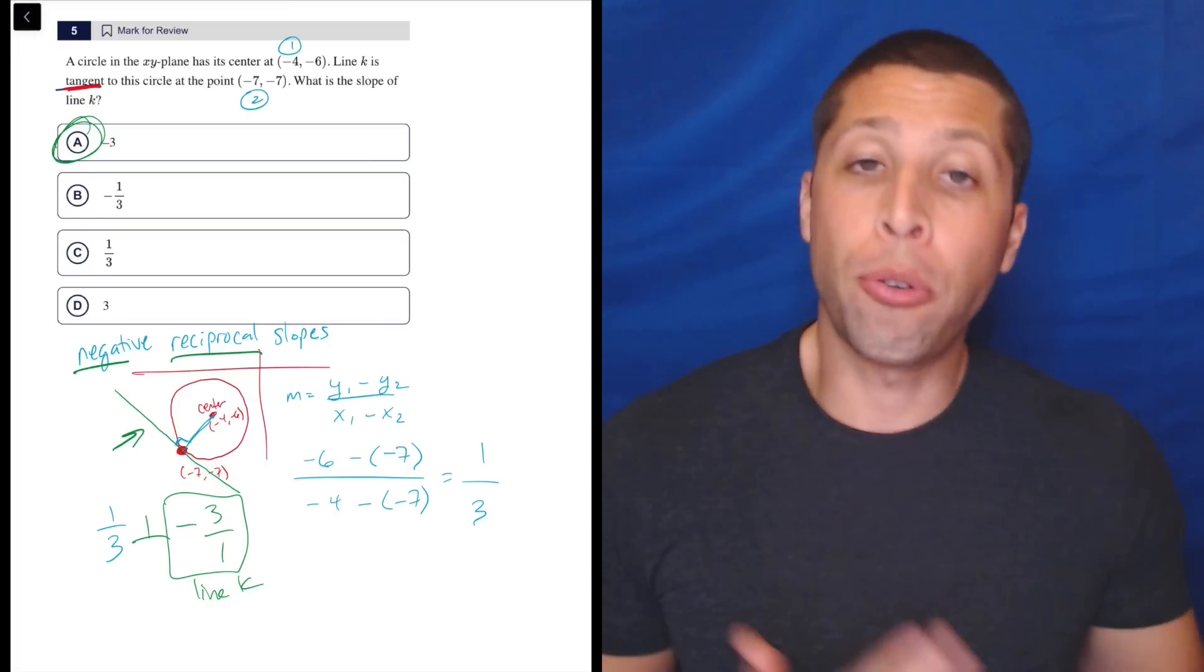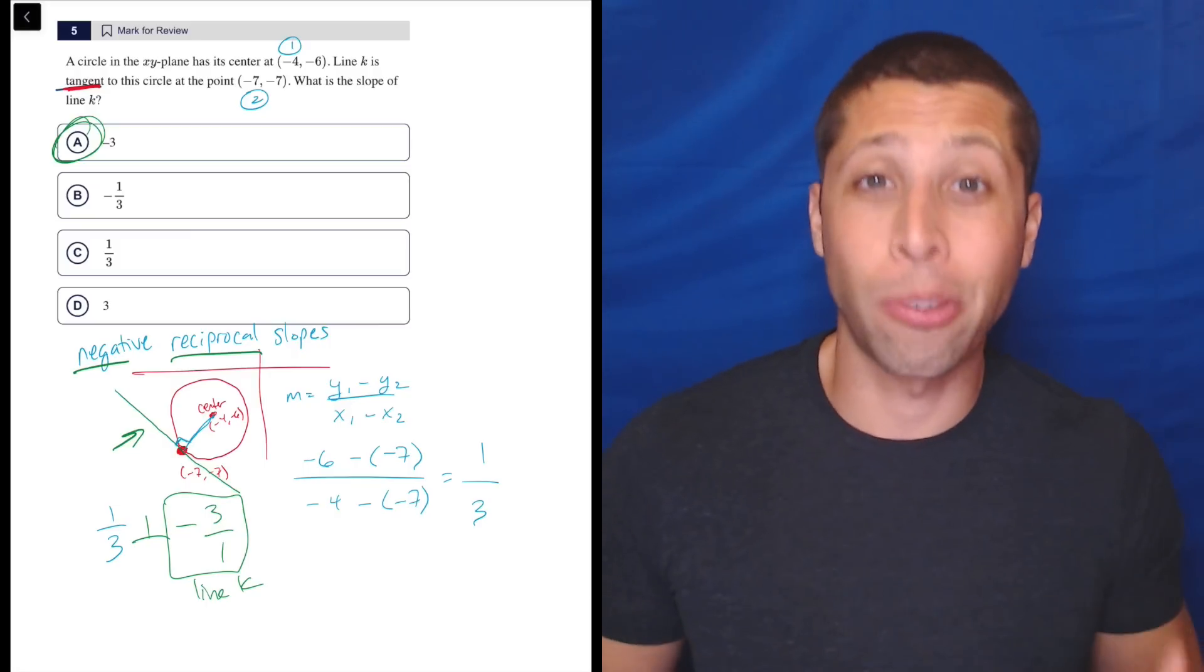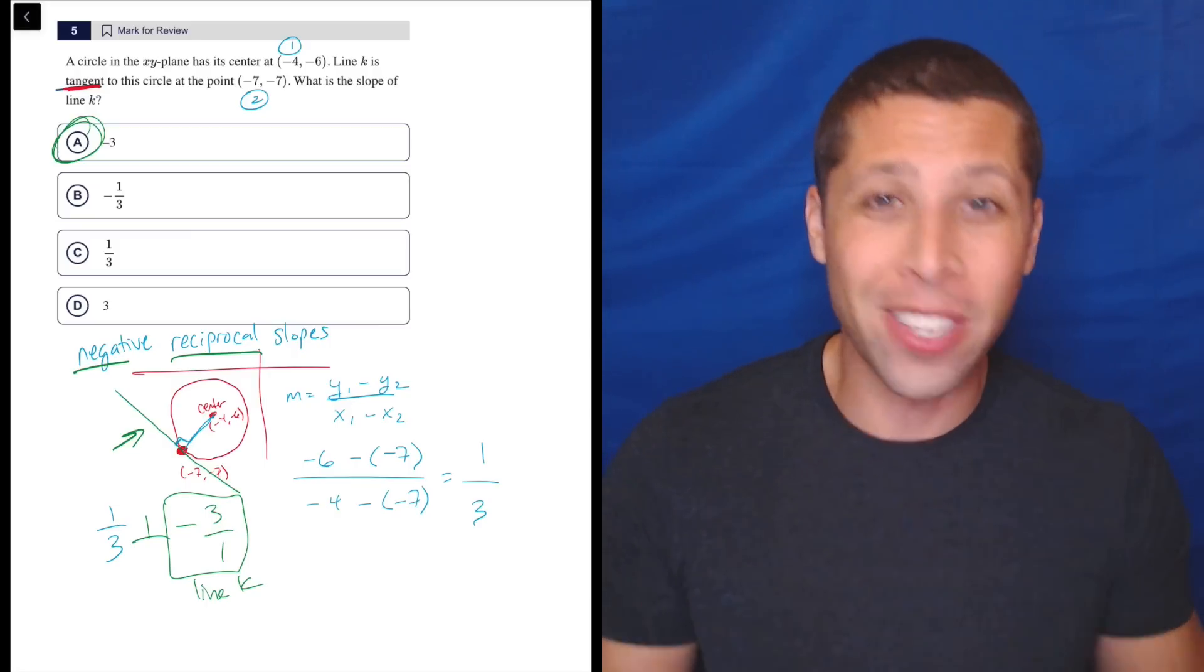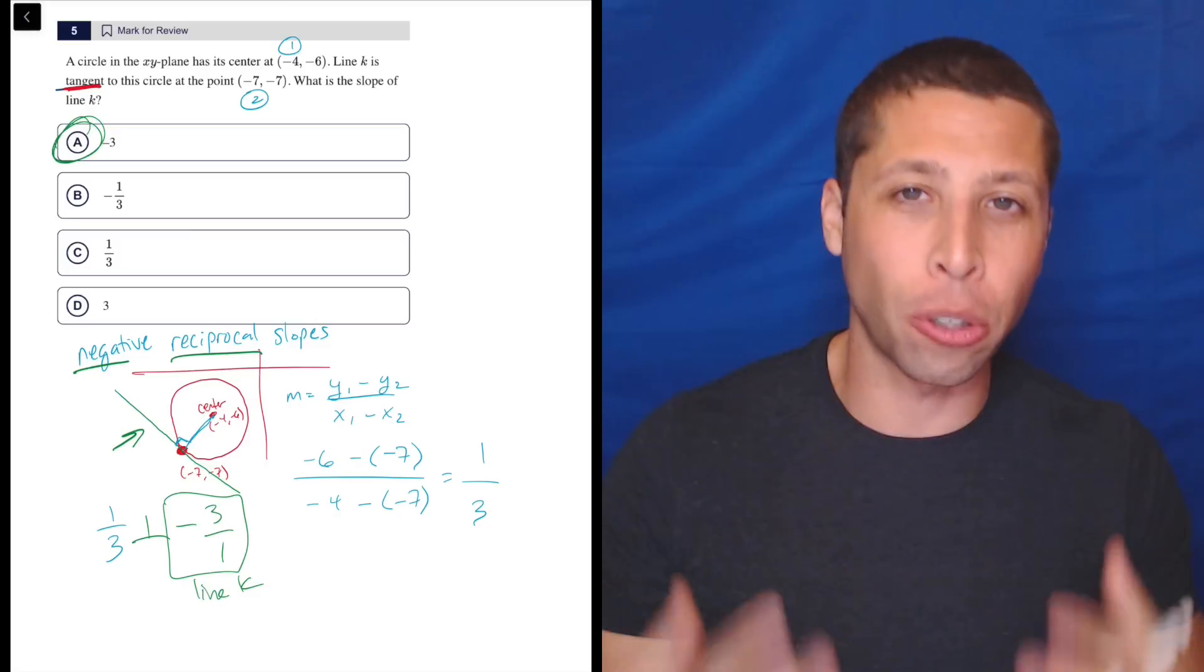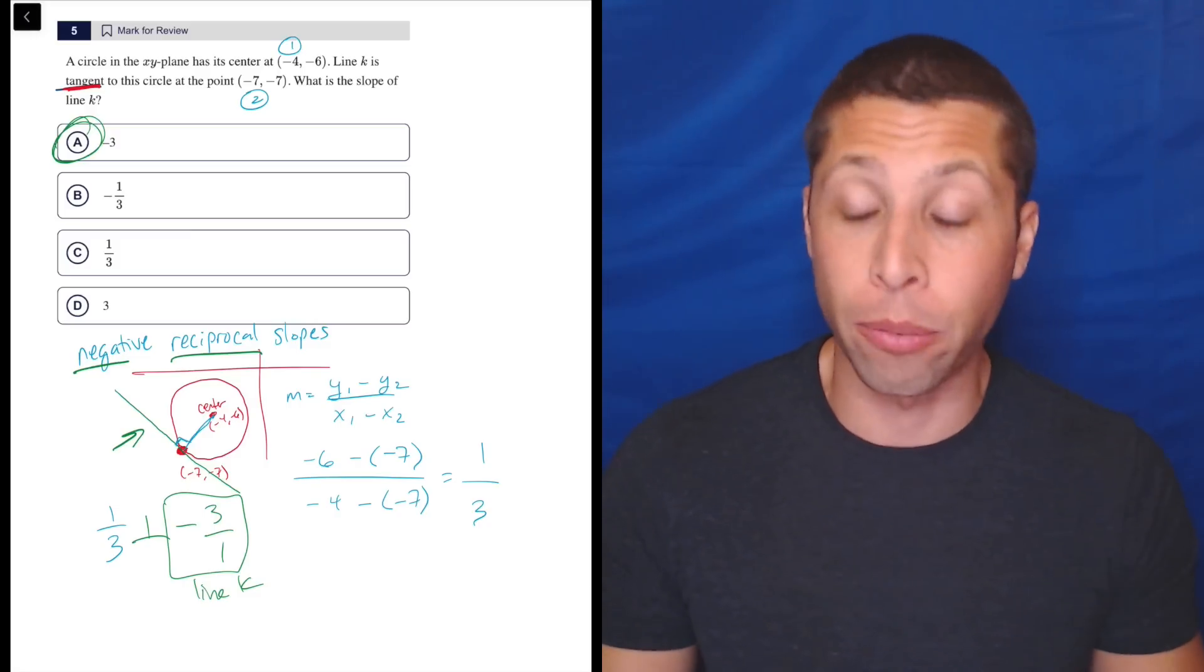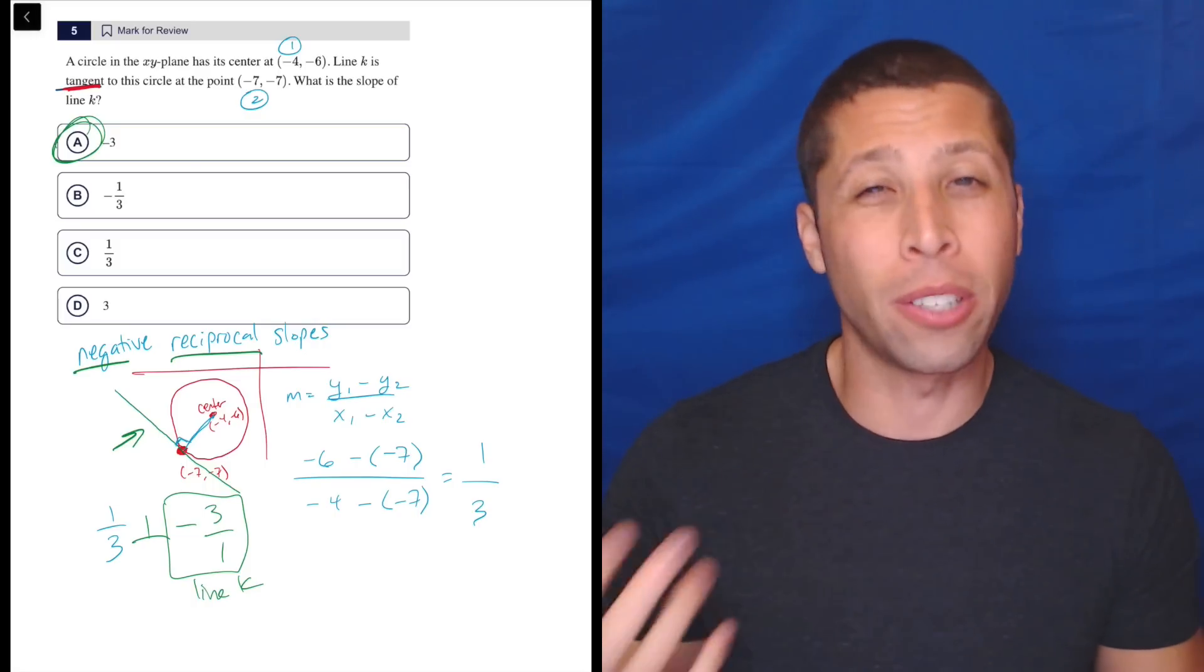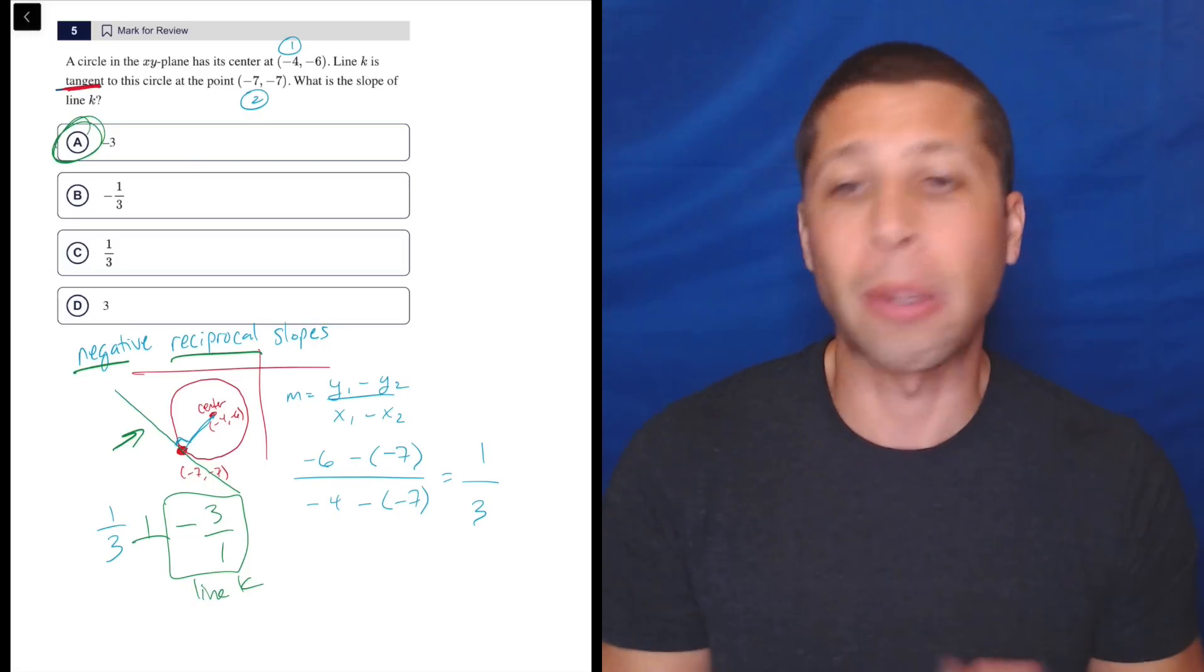So yeah, that took a turn that went to a place that I wasn't expecting, but I still consider this a circle question because I think that's what you're going to think about when you see it at first. But it's not really about that circle equation that we've been using. This ends up being about slopes and weirder things. But still better to think about this as an XY plane question.